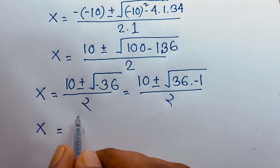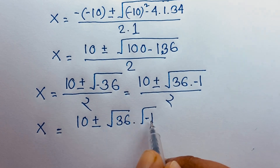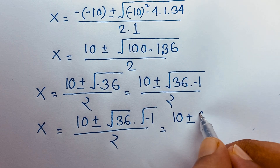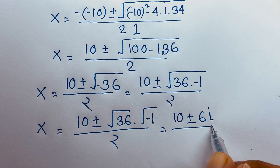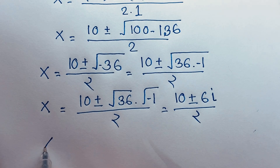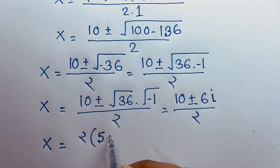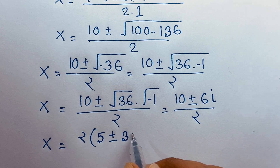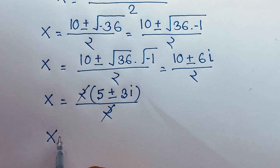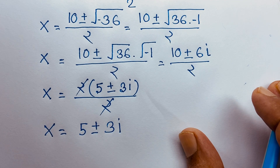So x equals 10 plus or minus square root of 36 times square root of negative 1, over 2. Square root of 36 is 6, and square root of negative 1 is i. We know that square root of negative 1 equals i — it is a complex number. Since 2 is common, 10 divided by 2 is 5, and 6 divided by 2 is 3, so x equals 5 plus or minus 3i. Both values are complex numbers — there is no real solution.